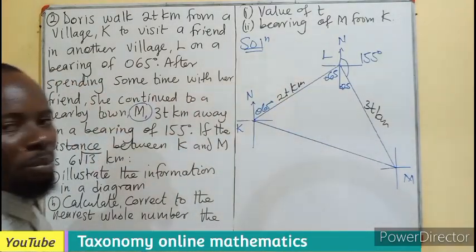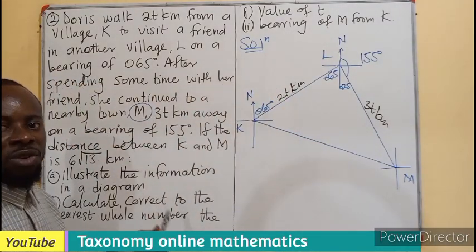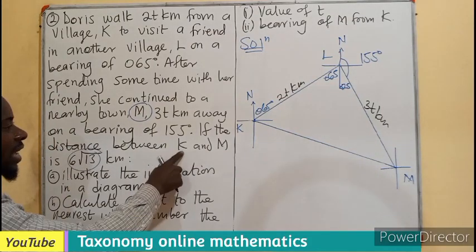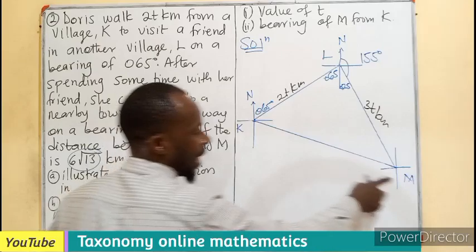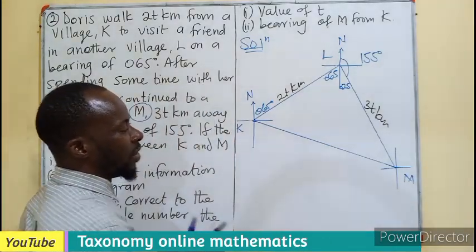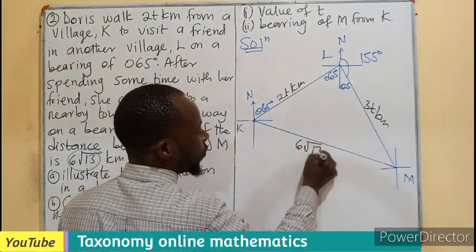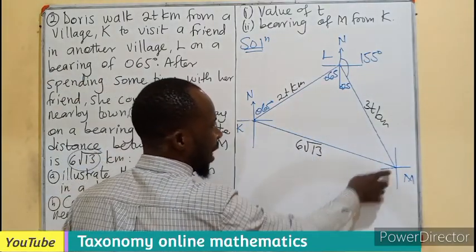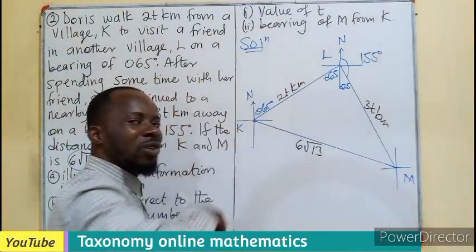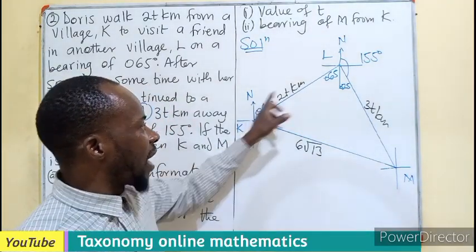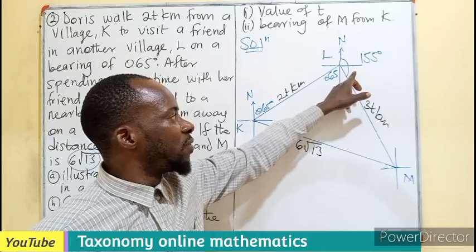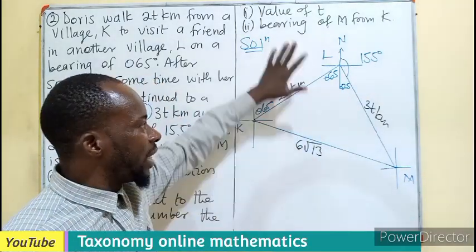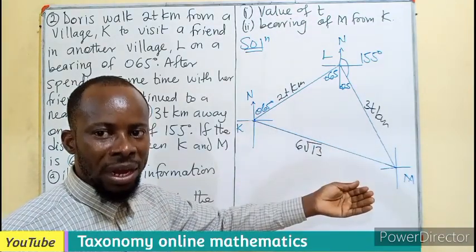We are drawing this to complete the diagram in the form of a triangle also. But because also we are told that the distance between K and M has also been given as 6 root 13, so that in joining this together, we form a complete triangle. Then we already know this is 65, 65, 25. So this will give us 90 degrees, making this triangle a right-angled triangle.